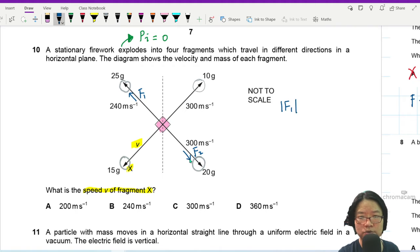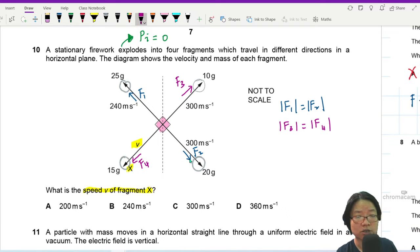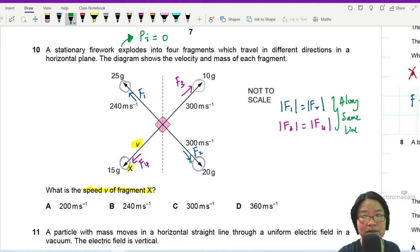The magnitude of F1 will be equal to the magnitude of F2. Just like the magnitude of the force pushing away this 10 gram fragment, let's say I call this F3, will be the same as the magnitude of the force pushing this 15 gram fragment. And the good news here is because they are along the same line. That's why we know the magnitude is the same. This magnitude is the same because it is along the same line, but opposite direction. Newton's third law, N3.